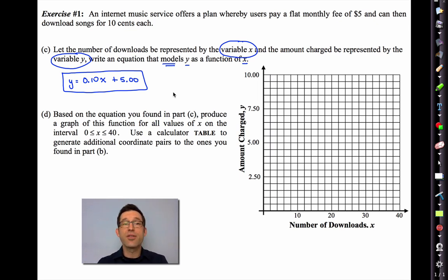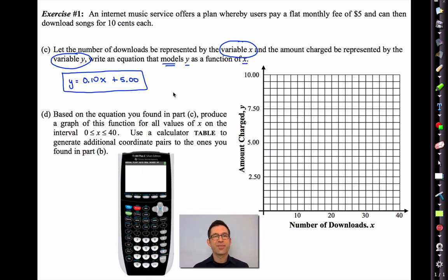So we took what we did in letter B and we just turned it into an equation. Letter D, based on the equation you found in part C, produce a graph of this function for all values of x on the interval 0 to 40. Use a calculator table to generate additional coordinate pairs to the ones you found in part B. All right. Well, why don't we do it? Let's bring open the TI 84 plus.